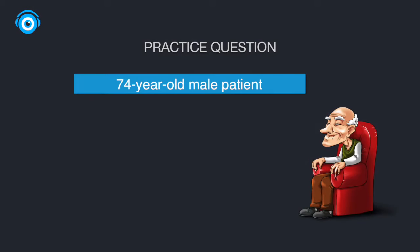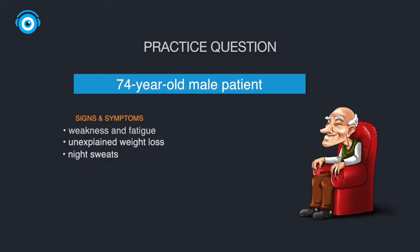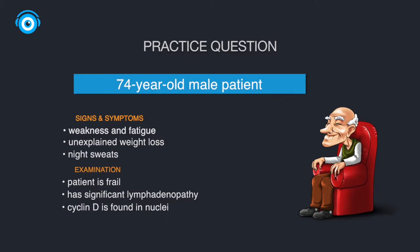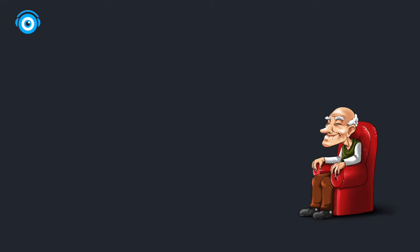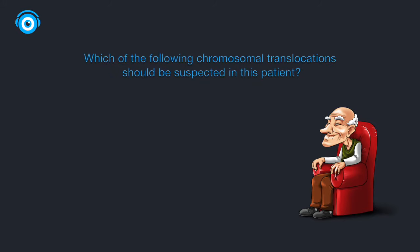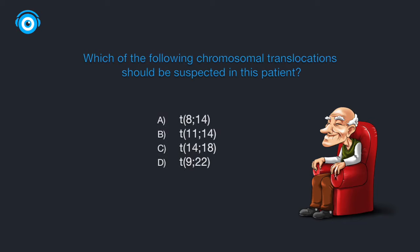Let's take a look at our practice question. A 74-year-old male patient experiences weakness and fatigue for the past several months, along with unexplained weight loss and night sweats. Upon examination, you see that the patient is frail and has significant lymphadenopathy. During histologic analysis of a nuclear stain, the product of cyclin D is found in nuclei. Which of the following chromosomal translocations should be suspected in this patient?